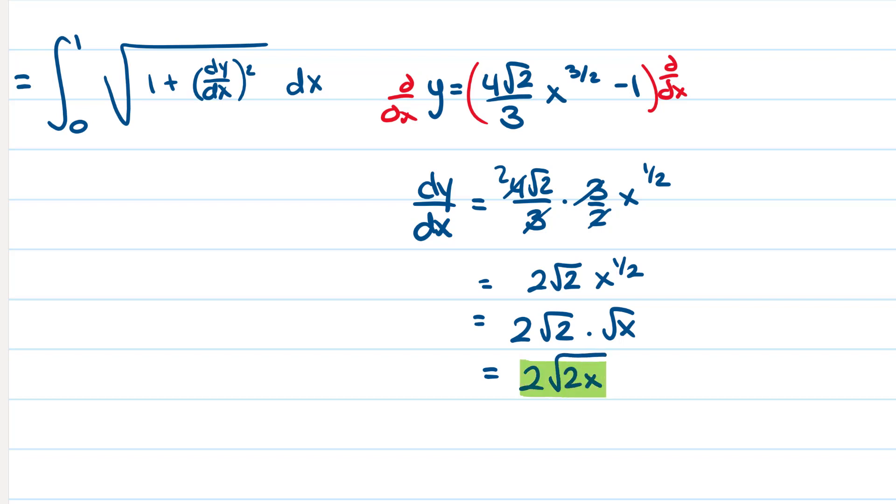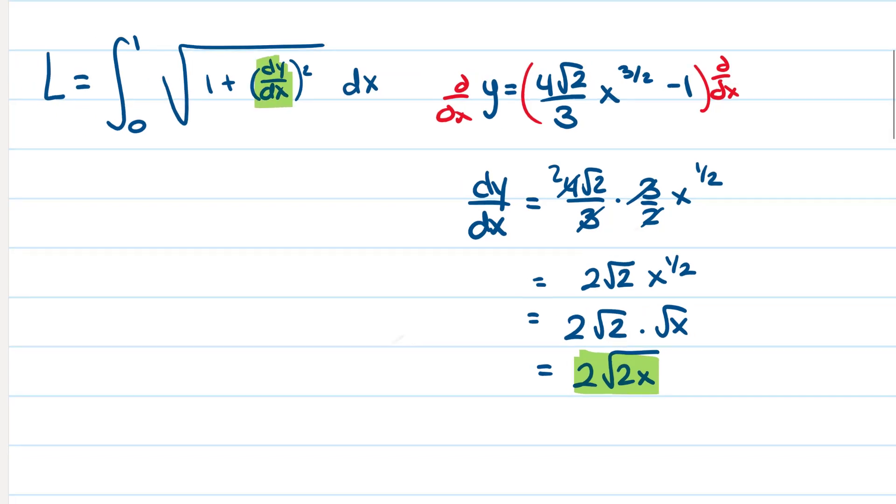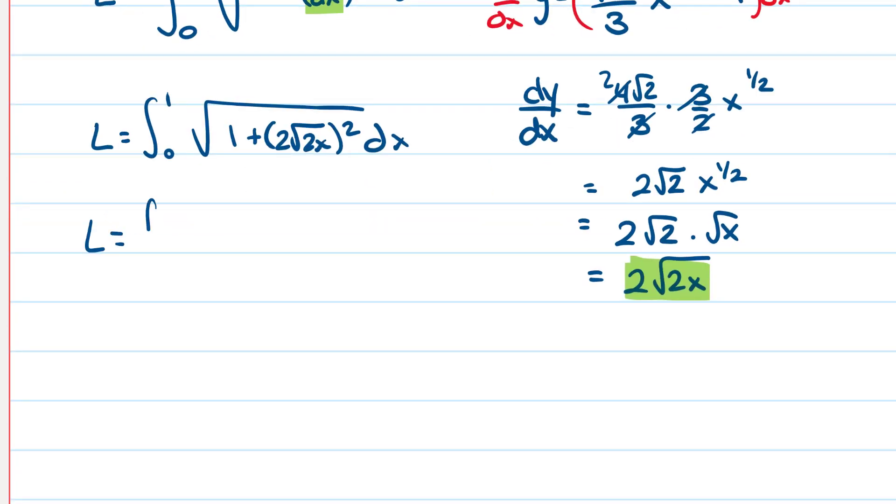This is going to take the place of dy dx. So we get the integral from 0 to 1, radical 1 plus 2 square root of 2 x squared. Integral 0 to 1, 1 plus 4 times 2 x. Integral 0 to 1, square root 1 plus 8 x dx.